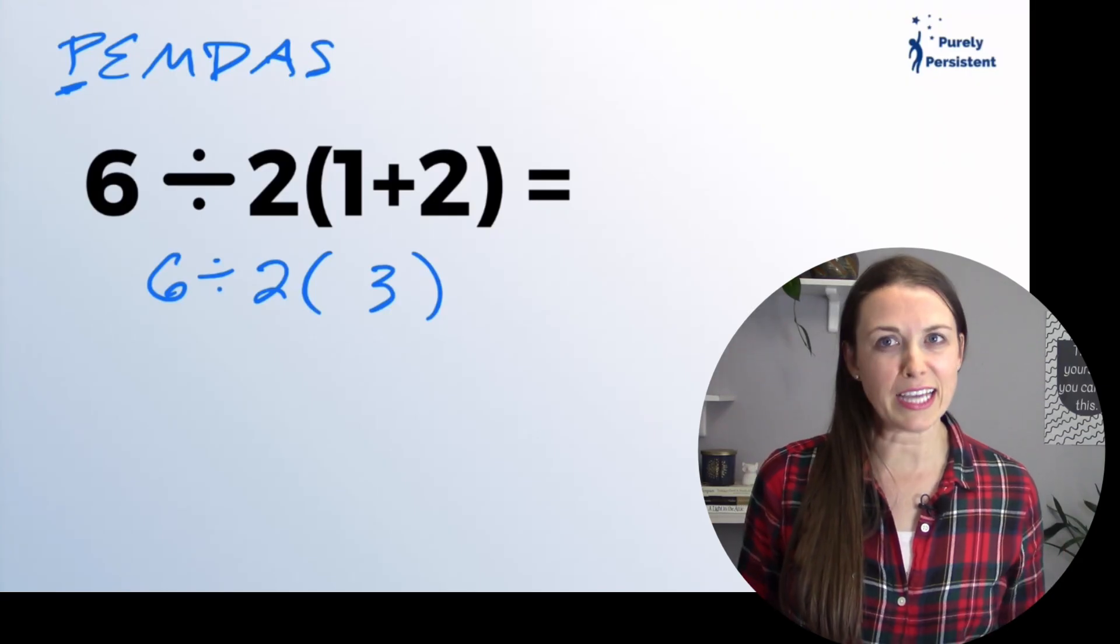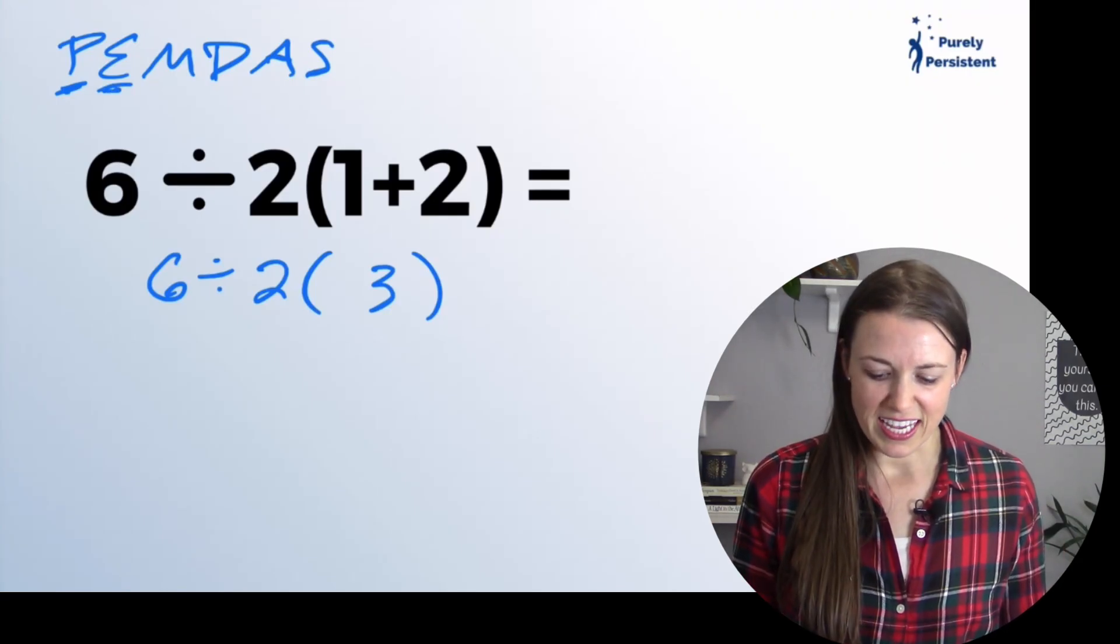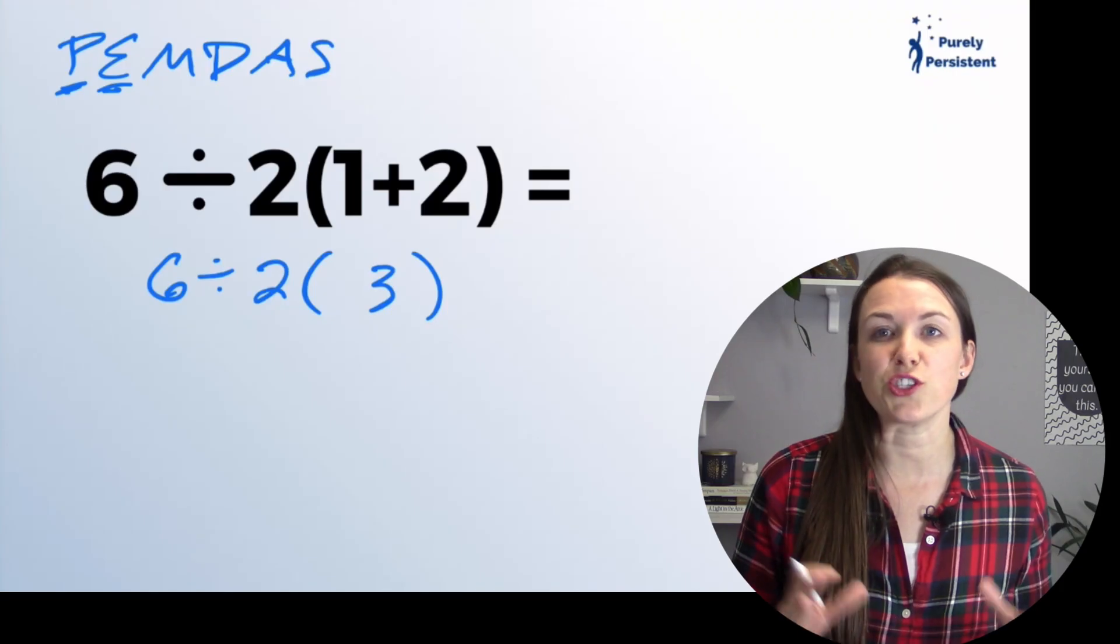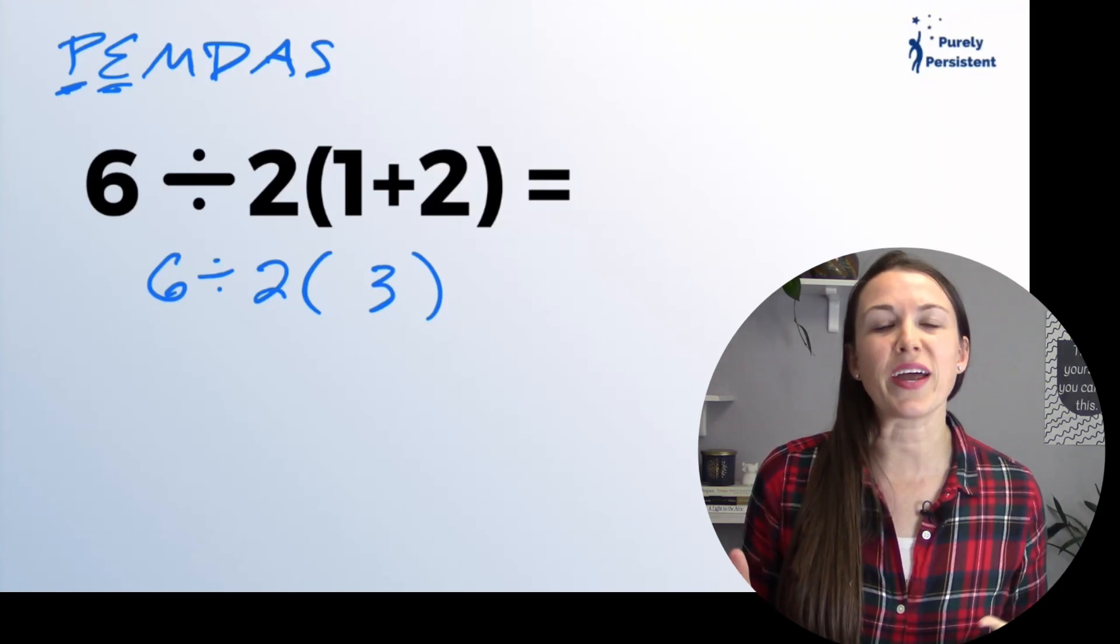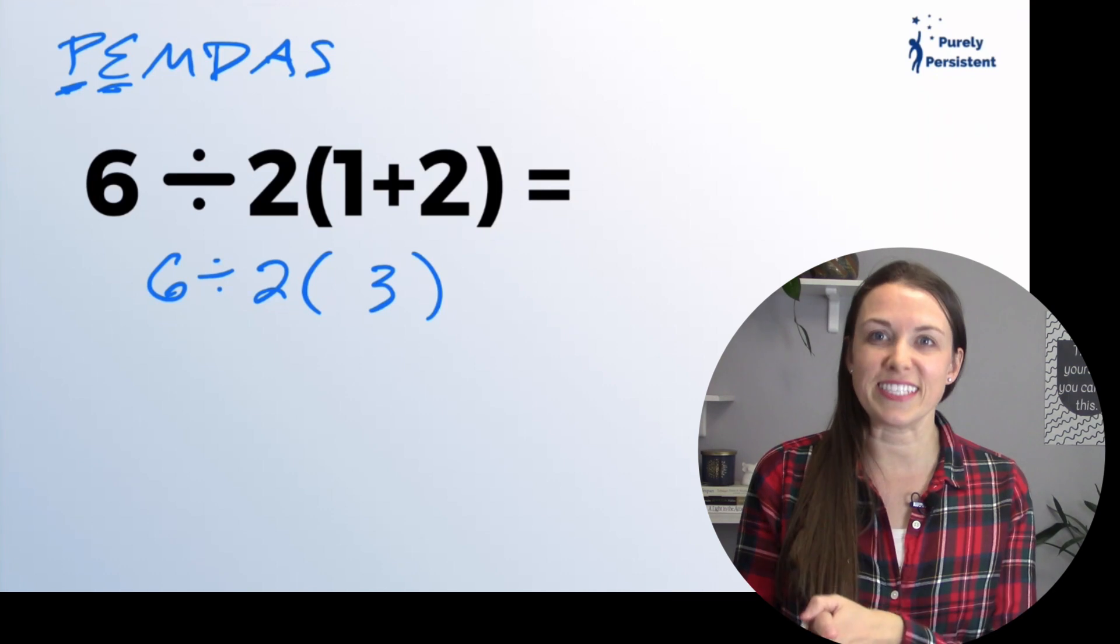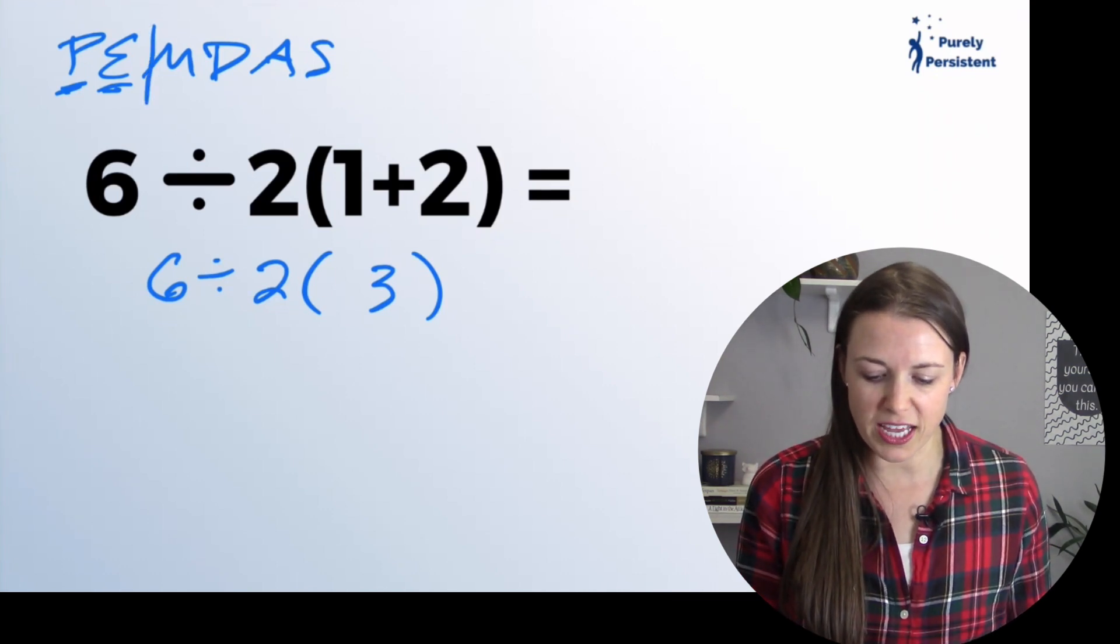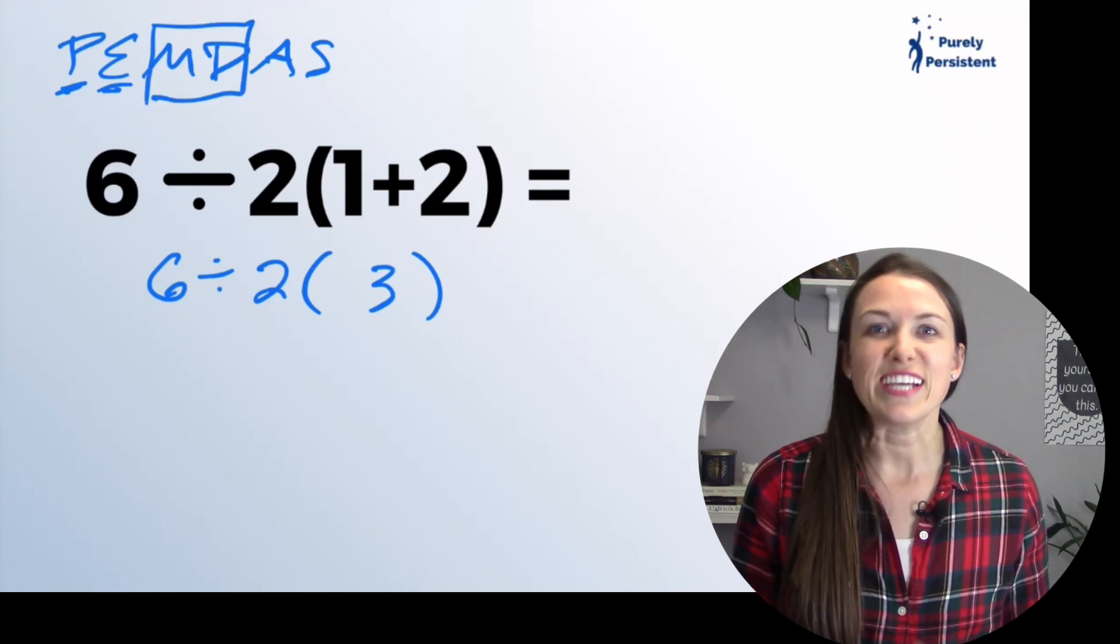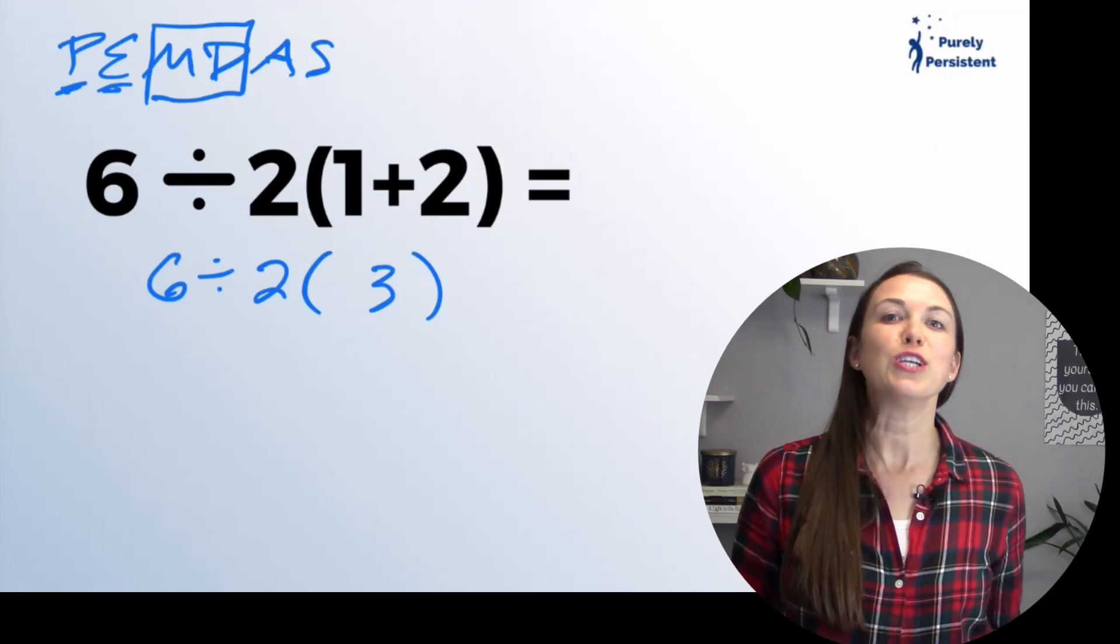Exponents. There are no exponents here. Next we have multiplication and division. And this is what actually trips people up because they see the M before the D. But really multiplication and division are buddies. So we're going to go from left to right.